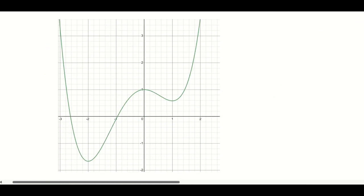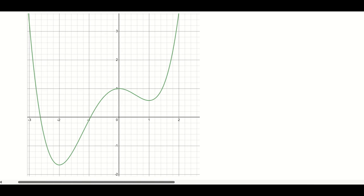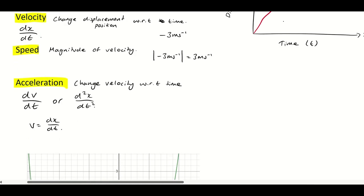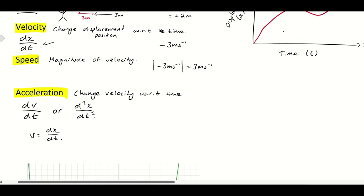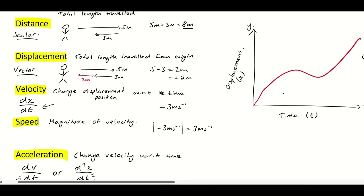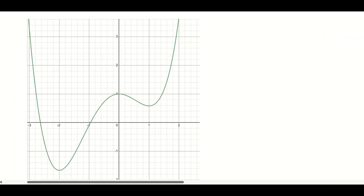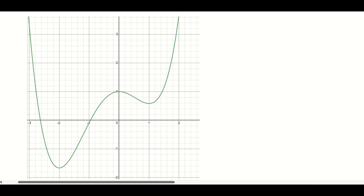Let's come down to this function and do a few questions that put all of this into practice. The key things to remember are: velocity is dx over dt, and acceleration is dv over dt. The displacement x is equal to a function of time: t to the power of 4 over 4, plus t to the power of 3 over 3, minus t squared plus 1. We're going to find out a few things about this particle's motion.